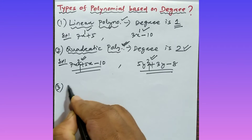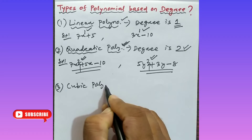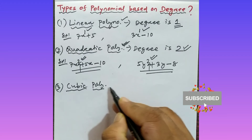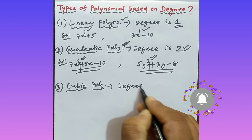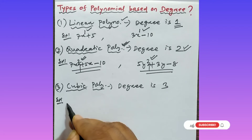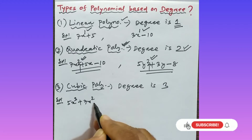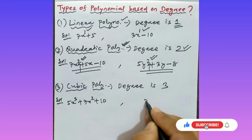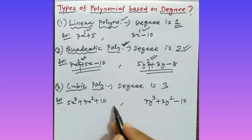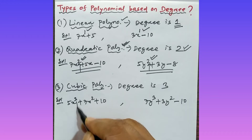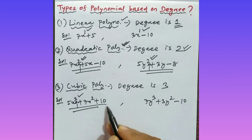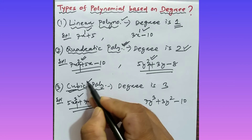Now look at the next one — that is cubic polynomial. What is the meaning of cubic polynomial? A polynomial whose degree is 3, that polynomial is called as cubic polynomial. For example: 5x cubed plus 7x squared plus 10. In this polynomial, the highest power of the variable is 3, so the degree is 3. As the degree is 3, this polynomial is called as cubic polynomial.